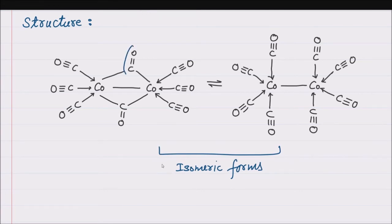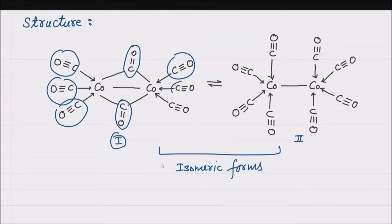In the first isomeric form, two CO groups are bridging; in the second case, there is no bridging CO group. The first has a bridged structure while the other has a non-bridged structure. The bridged structure has 2 bridging carbonyl groups, 6 terminal carbonyl groups, and one Co–Co metal-metal bond. The cobalt-cobalt bond distance in this structure is 2.52 Ångströms.